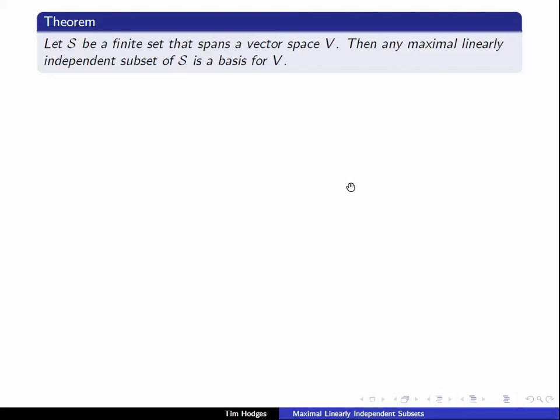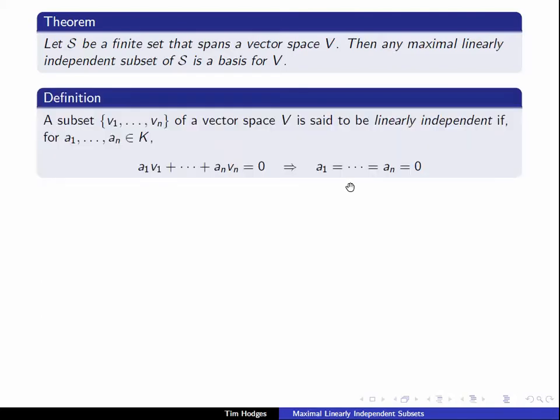So let's start by just recalling the basic definitions that are involved here. Remember that a subset V1 to Vn of a vector space is linearly independent if there are no non-trivial linear combinations of these elements equal to 0. In other words, whenever we have a1V1 plus anVn equal to 0, then all of these coefficients, all of these As must equal 0.